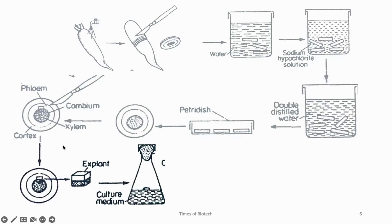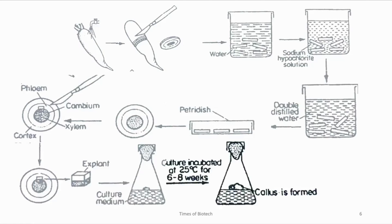Next, transfer this cut explant onto the culture media. This culture media can be of your choice as per the requirement of callus induction, or it can be a minimal MS media with 0.5 mg per litre concentration of 2,4-D, which is an analog of auxin. Once done, incubate in a proper environment as per the requirement, and after four weeks you will see that callus formation is taking place.